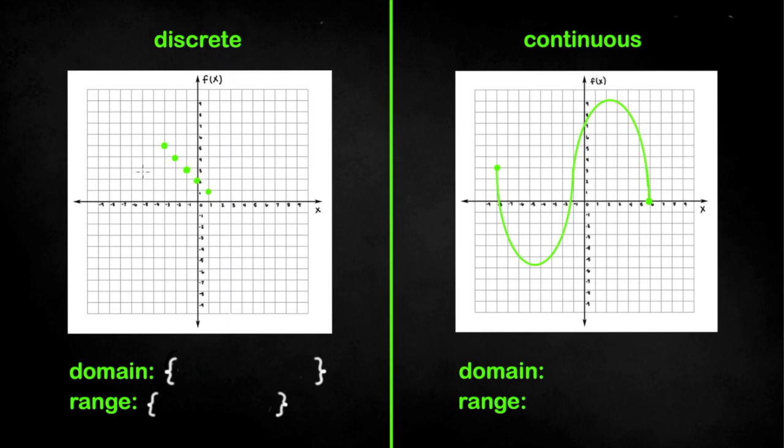So the first graph here is one of a discrete function. A discrete function is a function with distinct and separate values. On the other hand a continuous function is a function whose graph does not have any discontinuities or in other words any holes and gaps.